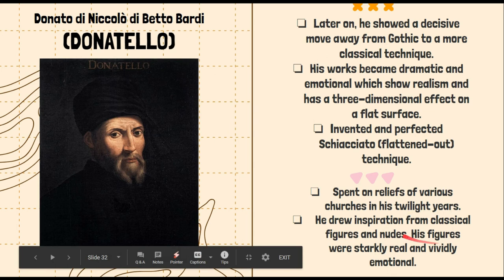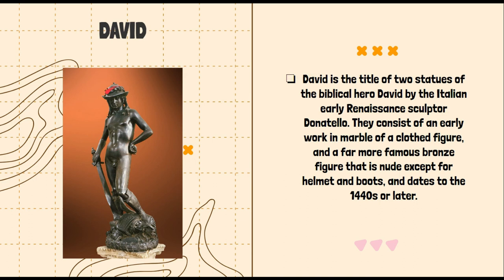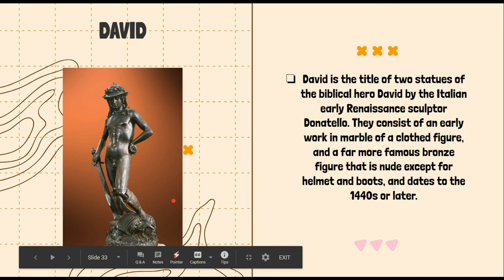The first artwork by Donatello is the sculpture of David. This is the title of two statues of the biblical hero David by the Italian early Renaissance sculptor Donatello. It literally depicts David who defeated Goliath. Donatello interpreted this as a nude sculpture, except for the hat and boots. The David sculpture dates to the 1440s or later.